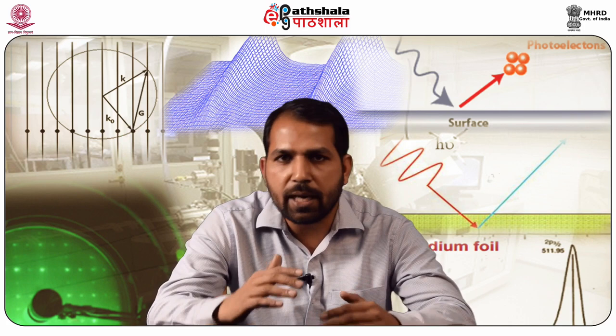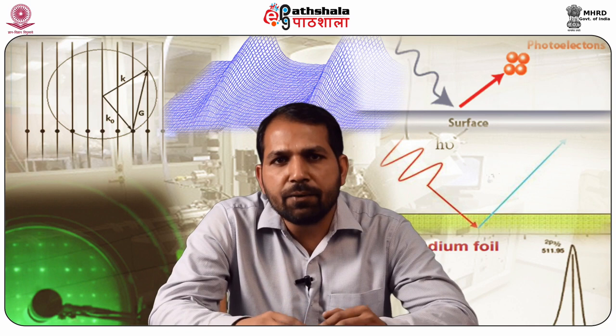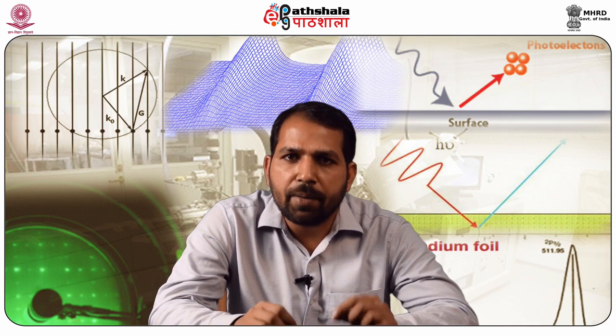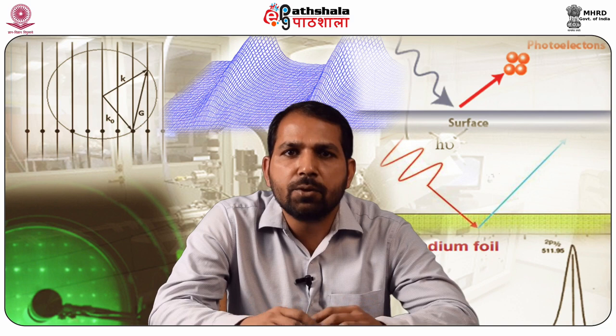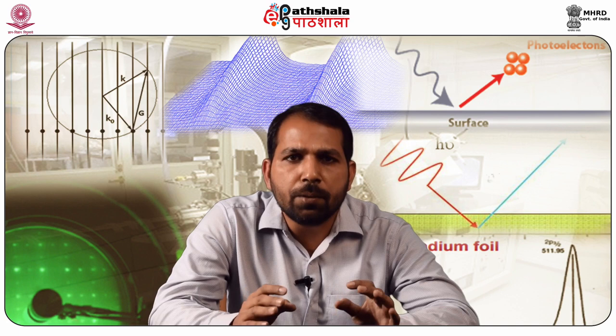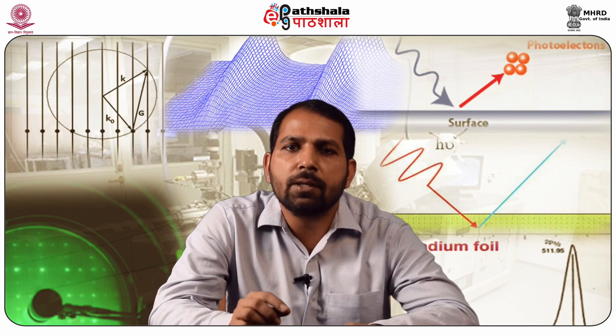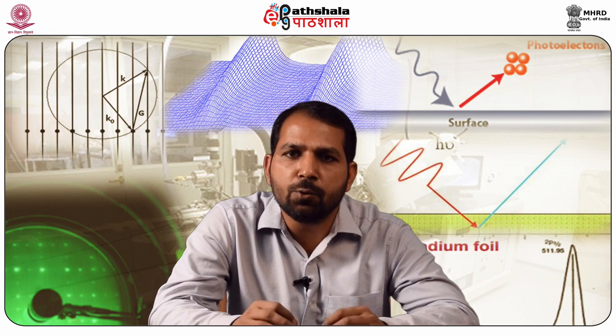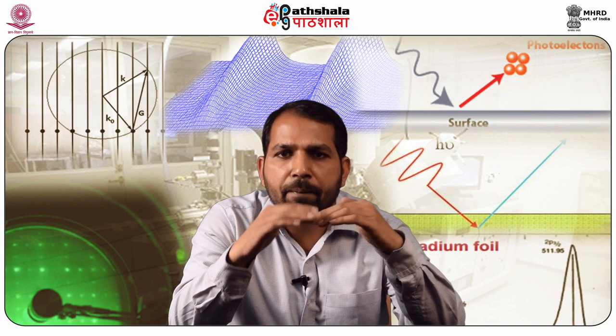A scanning tunneling microscope is an instrument for imaging surfaces at the atomic level. Its development in 1981 by Gerd Binnig and Heinrich Rohrer at IBM Zurich earned them the Nobel Prize in Physics in 1986. Good resolution is considered to be 0.1 nanometer lateral resolution and 0.01 nanometer depth resolution. With this resolution, individual atoms within materials are routinely imaged and manipulated.